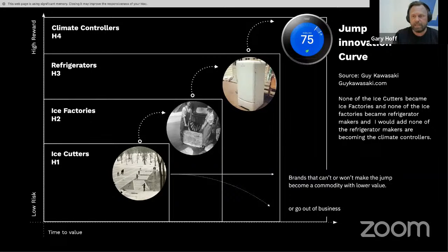None of the ice factories became refrigerators. So then refrigeration was made and people would plug a refrigerator in. Now, there's not many ice cutters around and ice factories make a dollar for a bag of ice. You become a commodity. If you don't jump that innovation curve, or if you don't jump to the next horizon, you're going to go out of business or become a commodity.